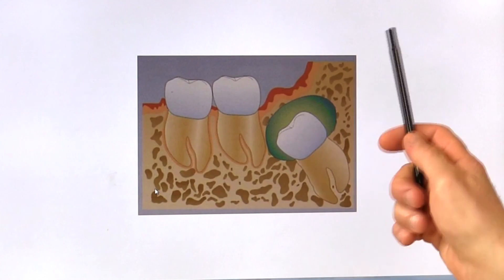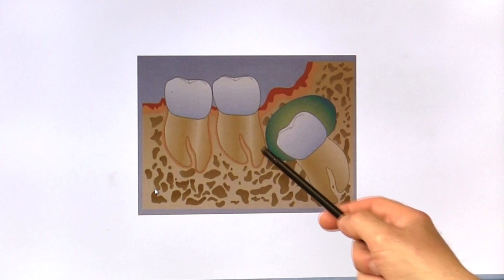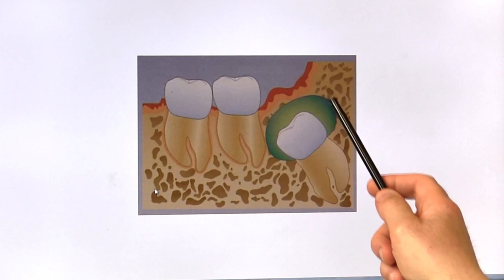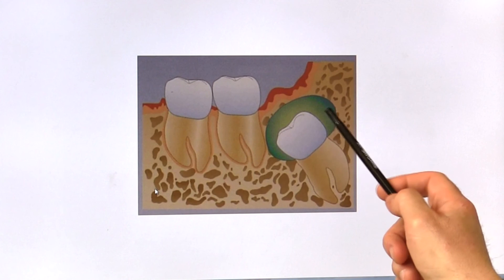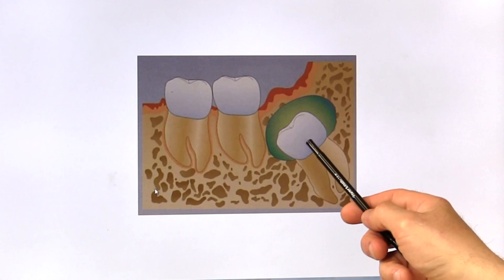Before we understand why that is a problem, we need to discuss exactly how the teeth develop. When we look at the picture over here, it's going to show us that the wisdom teeth — or any teeth actually — develop within a sac of tissue, which we call the follicular sac. It's basically a very metabolically active tissue that is responsible for the development of the tooth. As the tooth erupts or comes into the mouth, the sac of tissue disintegrates — it comes apart — which is a normal process.